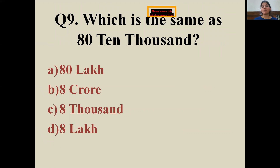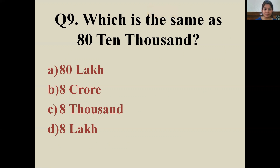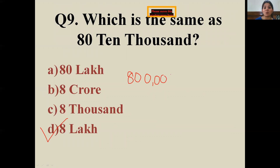Next question: which is the same as 80 × 10,000? Options are in front of you. Absolutely — 8 lakh! 80 is already there, and then 10,000. So 80 × 10,000 is 8 lakh. Wonderful!